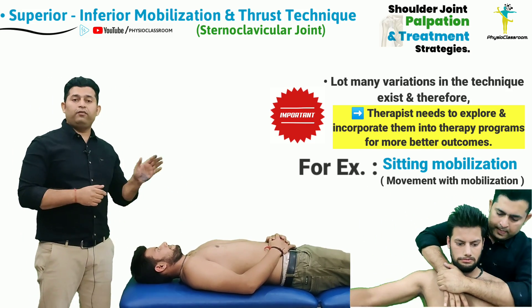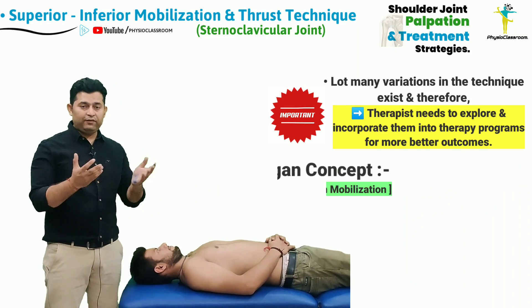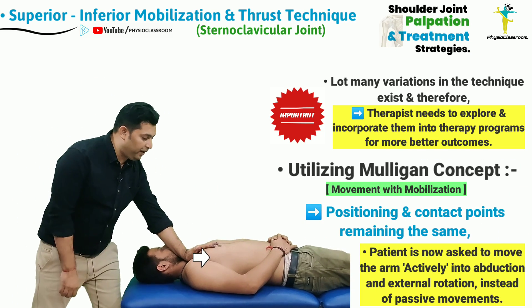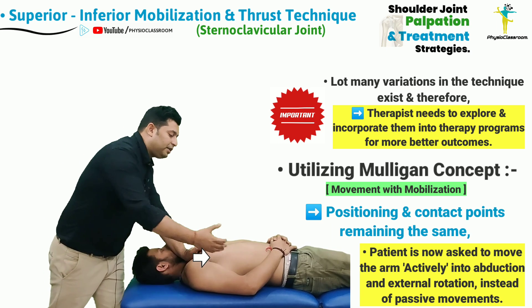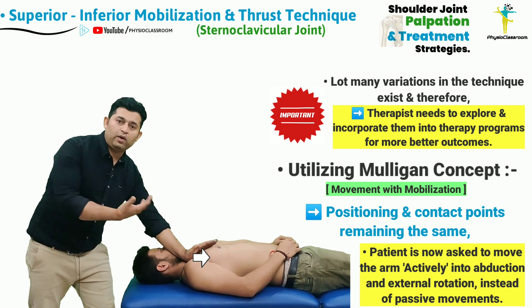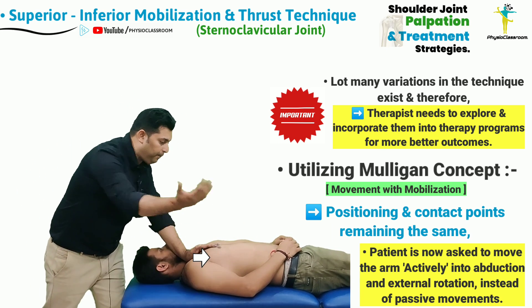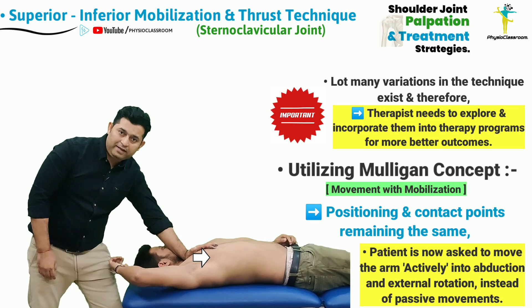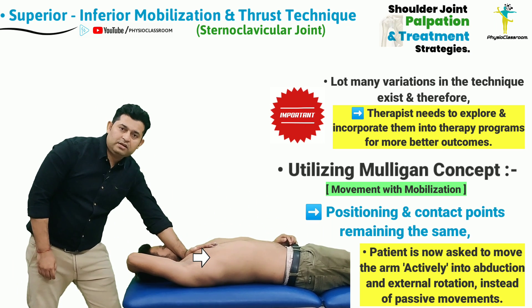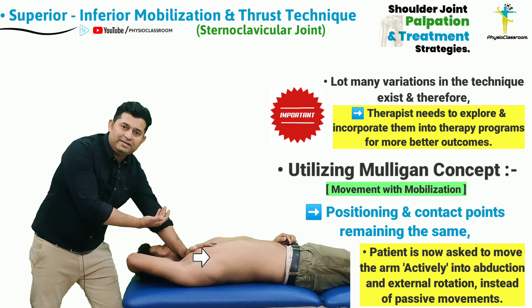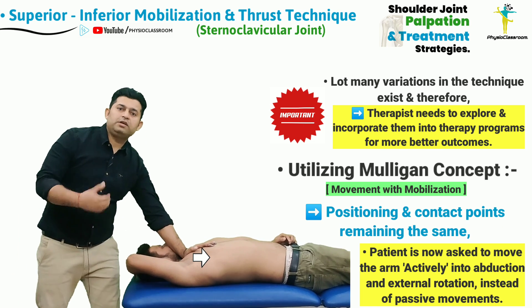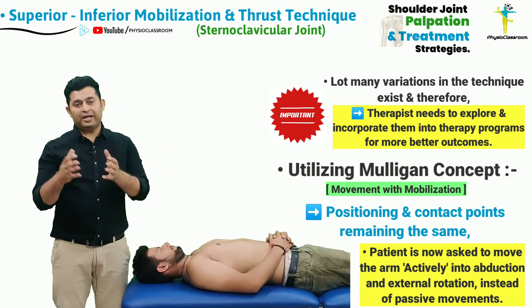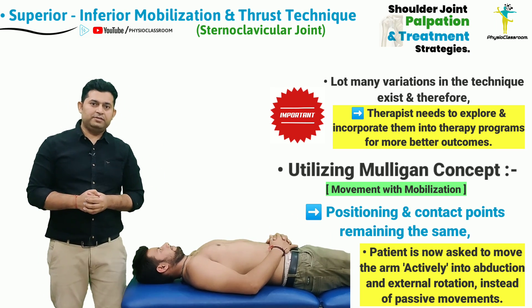The therapist can design different positions and contacts for delivering such glides. For example, maintaining the same contact point, rather than moving the arm passively, the therapist asks the patient to actively take their hand up and bring it toward the other side while the therapist mobilizes. This is the movement with mobilization technique, and many such variations can be explored by the physiotherapist.